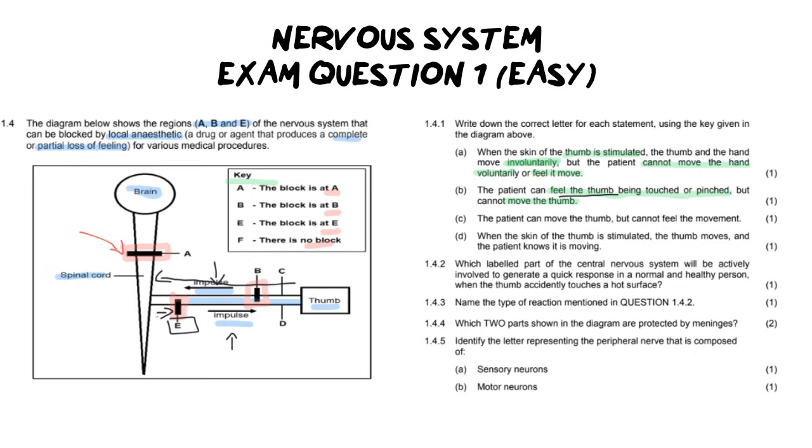Now the next question is sort of the inverse because the next question says the patient can move their thumb, but they cannot feel the movement. So in other words, they have motor function, but what they don't have is any sensation. So that incision or that blockage is going to be over here at B because that is the sensation nerve, it's the sensory neuron, it's impulse going from the thumb to the central nervous system.